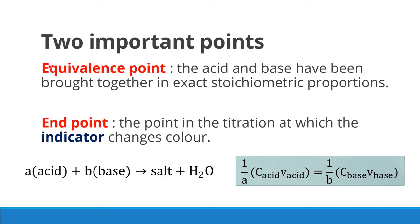So coming to these two very important points in titration: the equivalence point is the point where acid and base have been brought together in exact stoichiometric proportions. You need a balanced chemical equation so you can find out the mole ratio between acid and base.